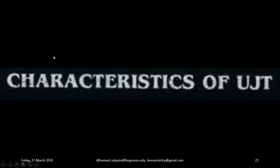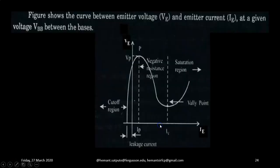Now let us see what is the meaning of characteristics of UJT. Now as we had already learned, characteristic of any device means it is the graph of current flowing through that device against the voltage applied across it. So for UJT.